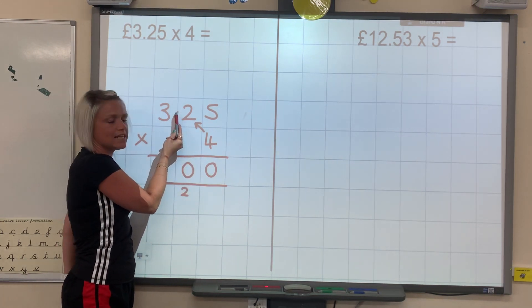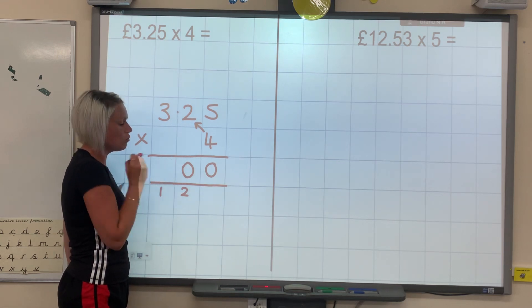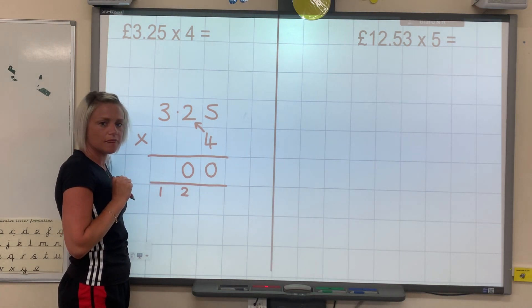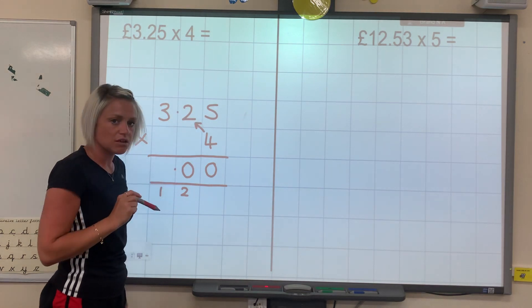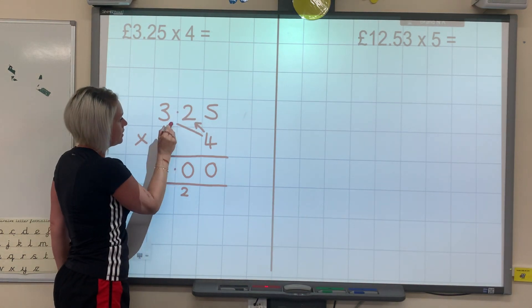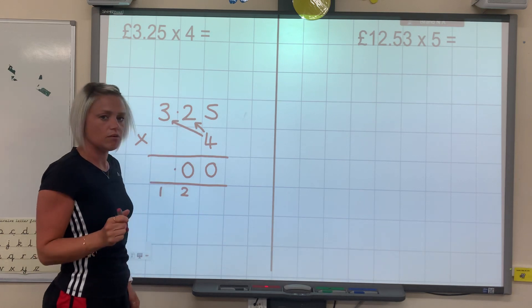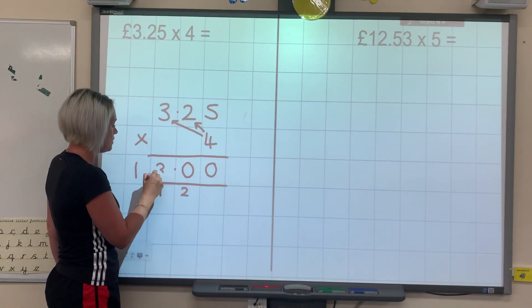Now, you can see here there's a decimal in this number here. So what have I got to put in my answer? If there's a decimal in the question, my answer has to have a decimal in as well. So now I do 4 times 3, which is 12. Add the 1, 13.